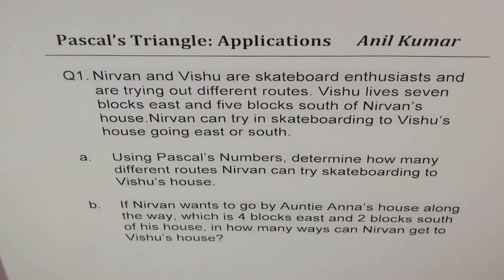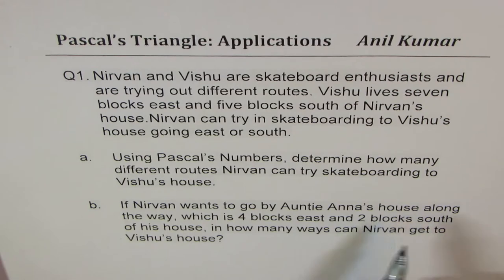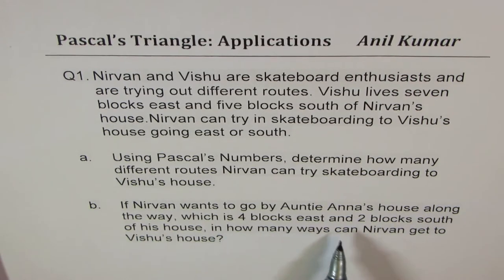Nirvan and Vishu are skateboard enthusiasts and are trying out different routes. Vishu lives seven blocks east and five blocks south of Nirvan's house. Nirvan can try skateboarding to Vishu's house going east or south. Using Pascal's numbers, determine how many different routes Nirvan can try skateboarding to Vishu's house. Part B: If Nirvan wants to go by Auntie Anna's house along the way, which is four blocks east and two blocks south of his house, in how many ways can Nirvan get to Vishu's house?